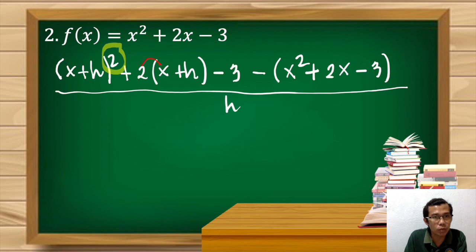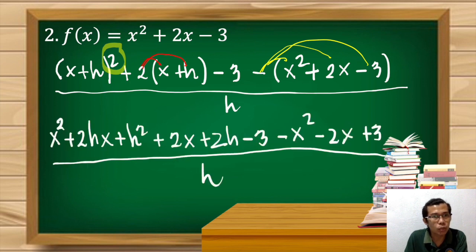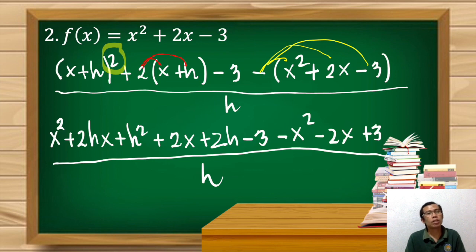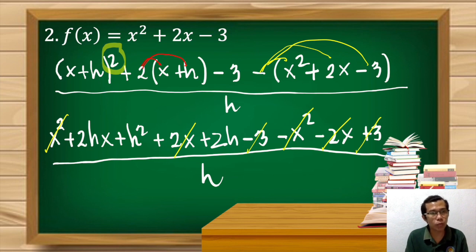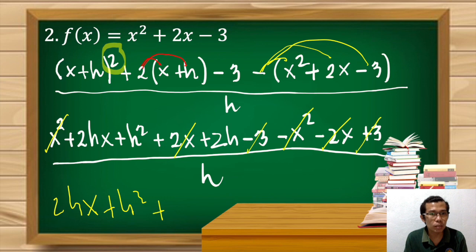We expand (x+h)² and distribute the terms, then also distribute the negative sign inside the parentheses. Our answer becomes x² + 2hx + h² + 2x + 2h − 3, and then distributing the negative sign we have negative x² − 2x + 3, divided by h. From here we have common terms to cancel: x² and −x² cancel, negative 3 and positive 3 cancel, and 2x and −2x also cancel.